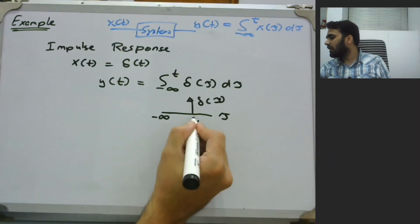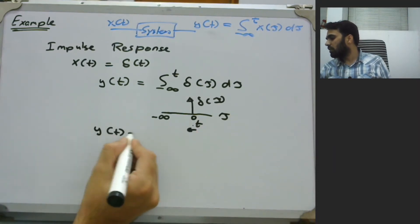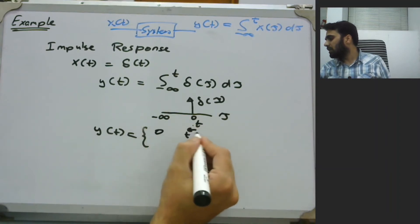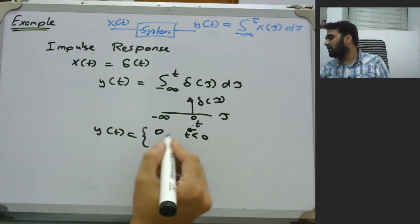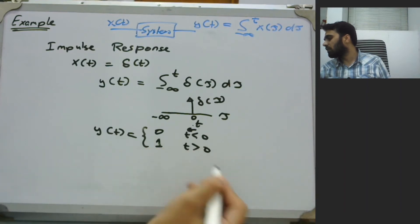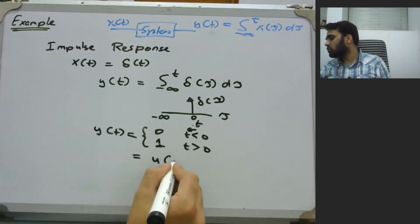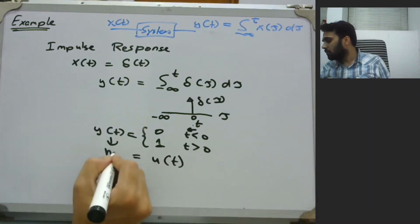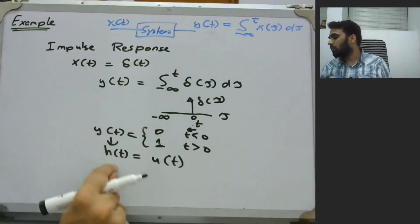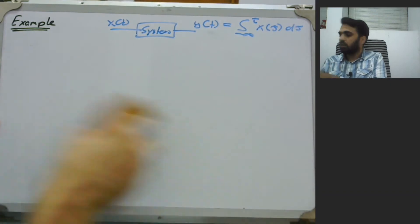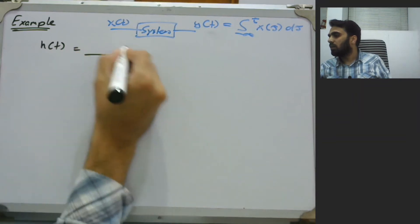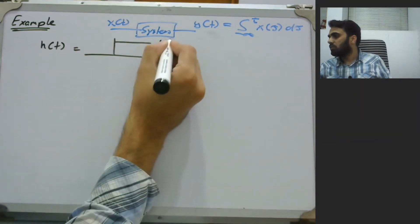This means we simply have one Dirac delta function in terms of TAU, and Y of T integrates from minus infinity to T. If this variable T is less than zero, we are not getting any value, so the output is zero for T less than zero. But when T is greater than or equal to zero, the output would be 1. This means our output is U of T — this is our impulse response. So H of T is simply the unit step function U of T.